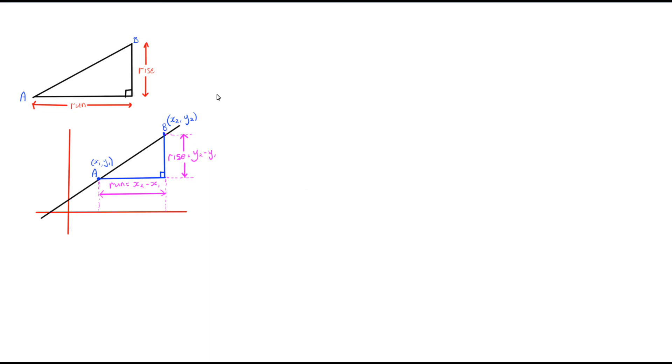In this video we're going to talk about the gradients of straight lines. So the gradient is pretty much the slope, or how steep a line is between two points. So here we've got two points A and B, and so what we're interested in is how steep this line is.